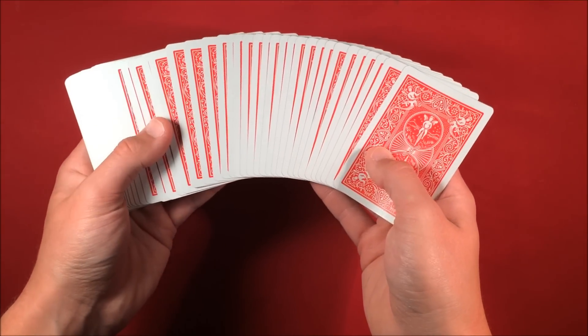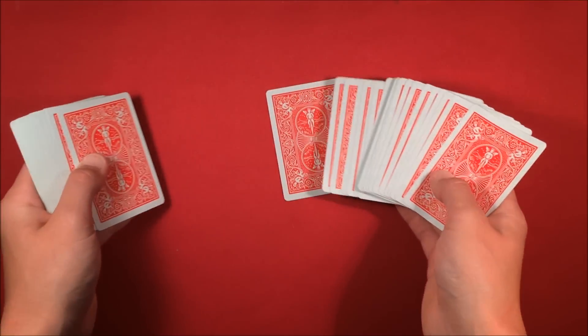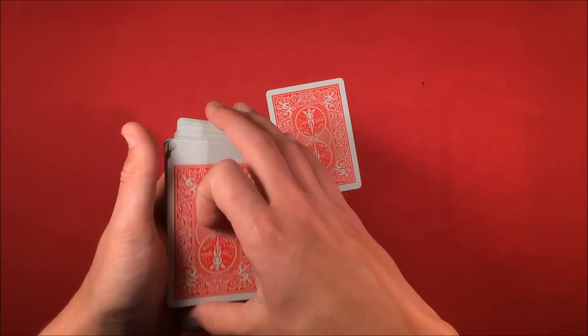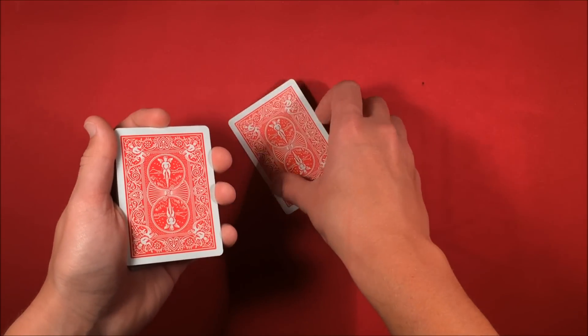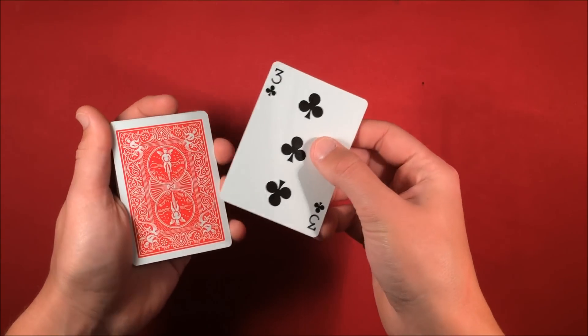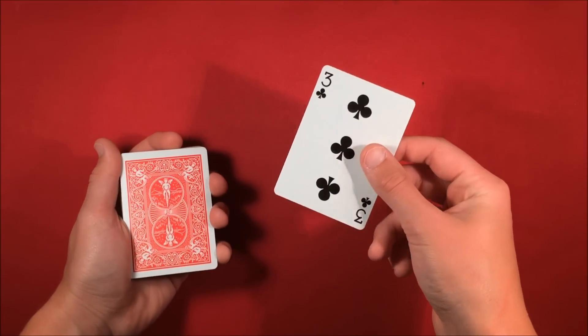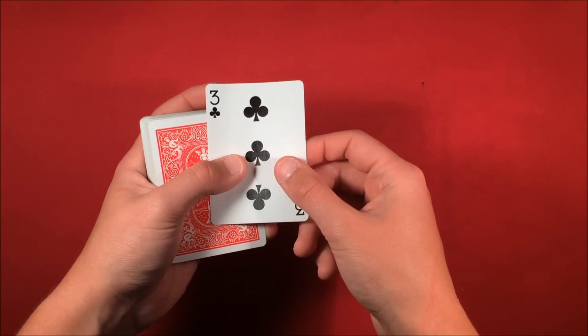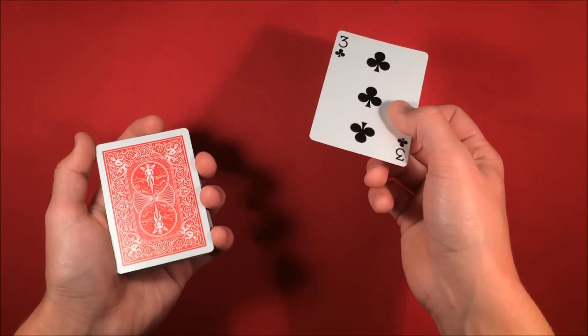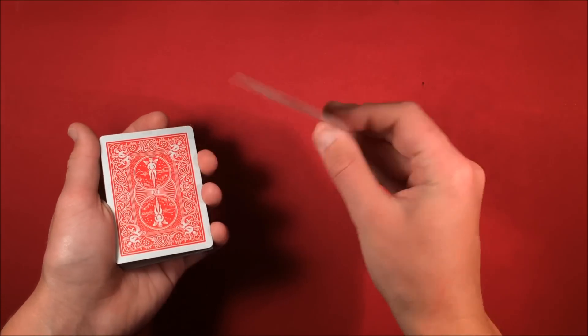You can have the spectator just pick a card. In this case while they're picking the card it doesn't matter which one it is. The biggest misdirection that you could use is you could have the spectators write their signature on it or you can just have them hold on to the card and ask them, is this an authentic card, does this feel real to you or something like that.